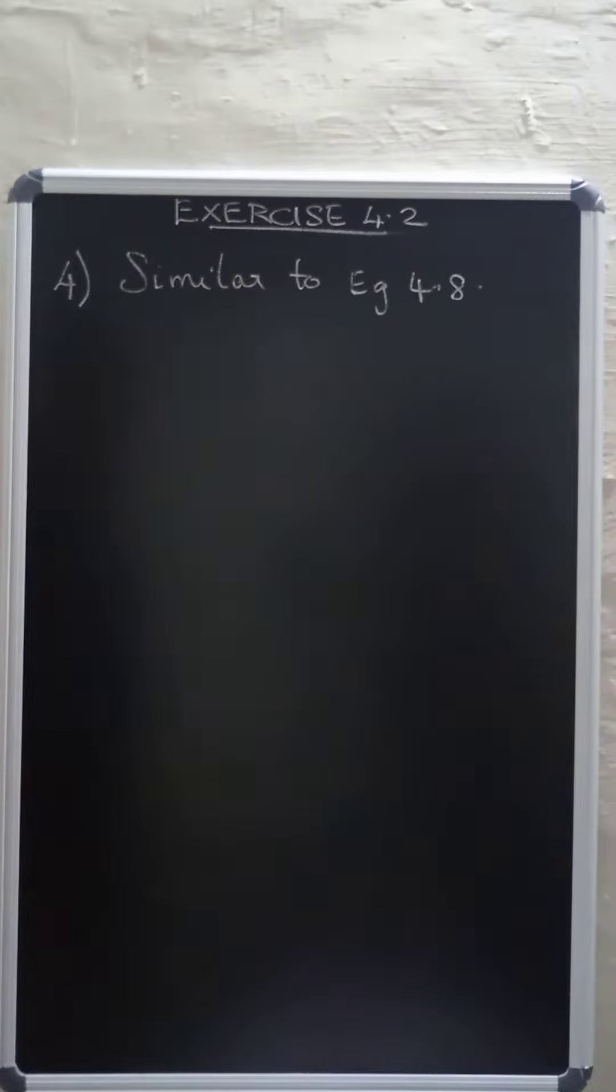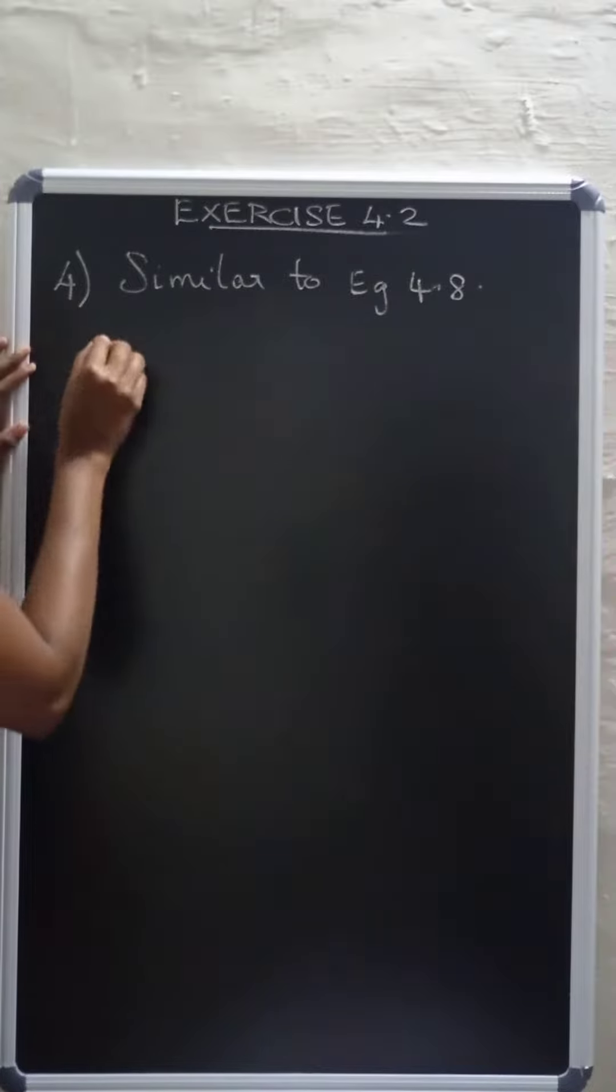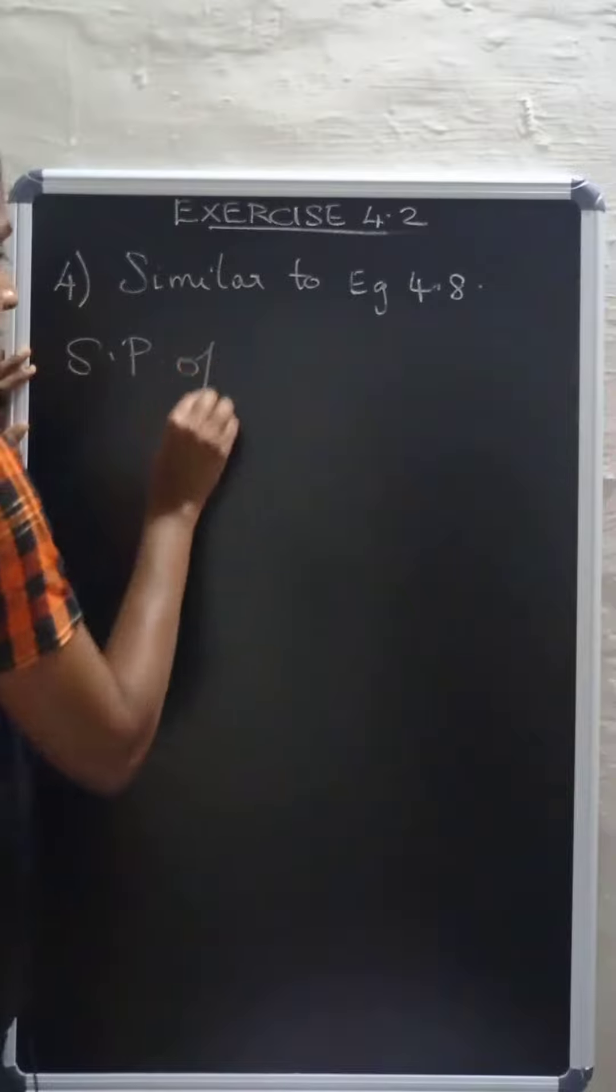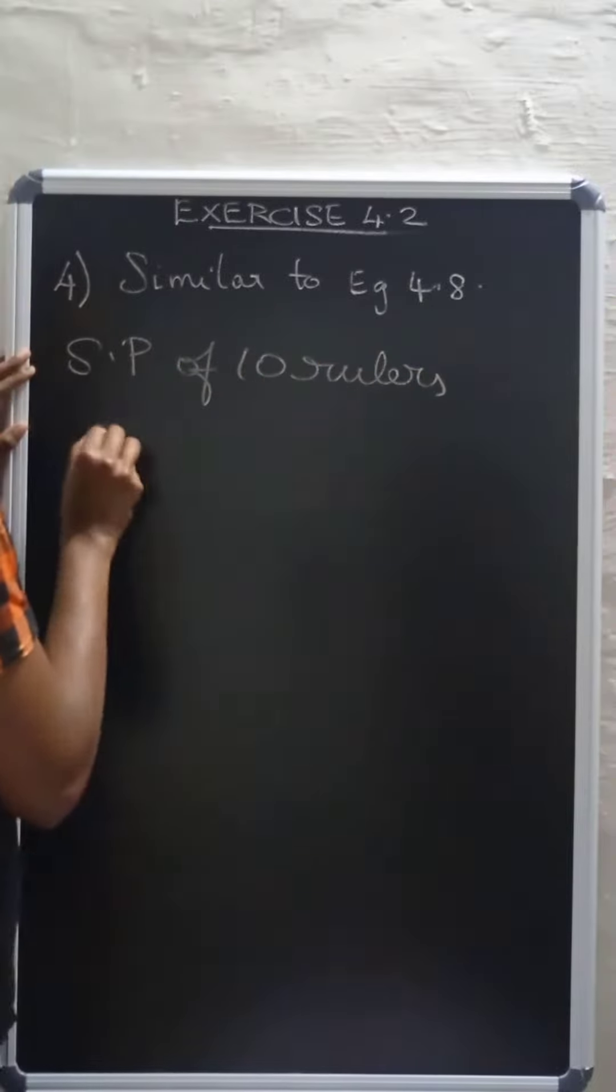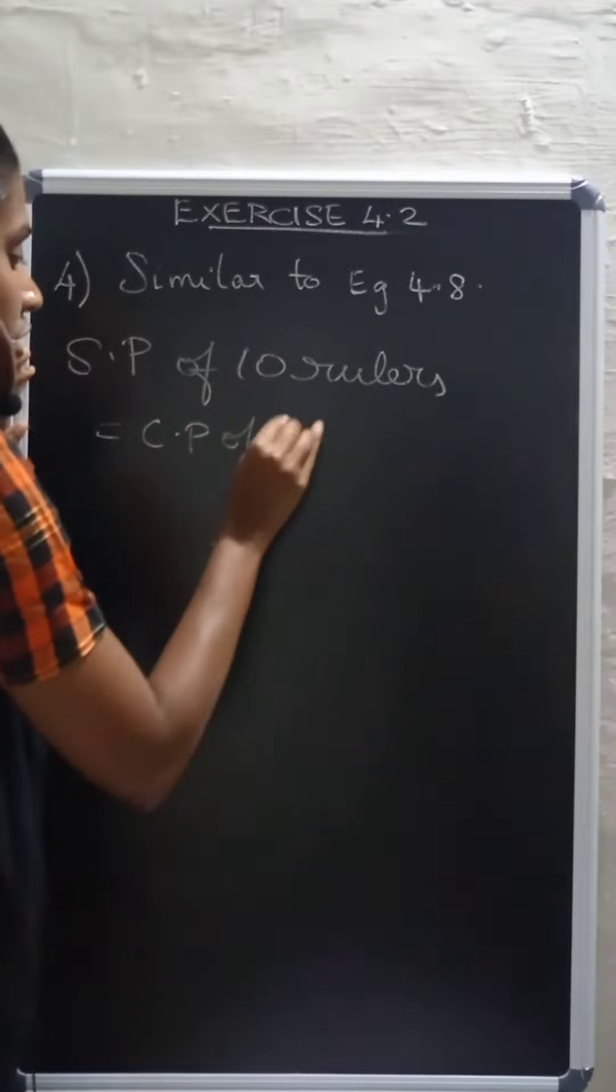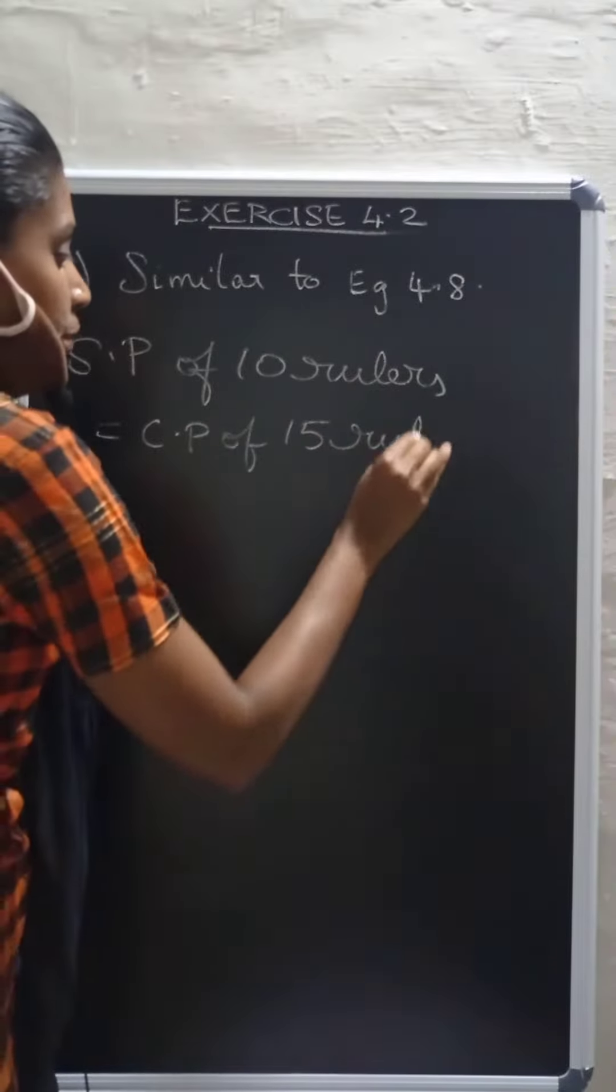If the selling price of 10 rulers is the same as cost price of 15 rulers, then find the profit percentage. So, selling price of 10 rulers is equal to cost price of 15 rulers.